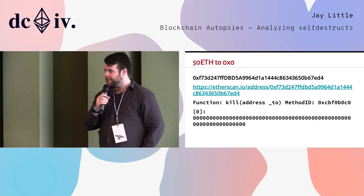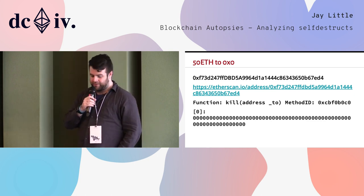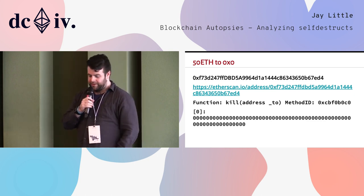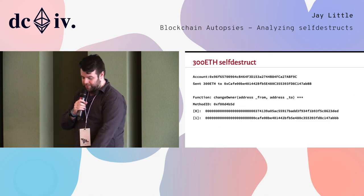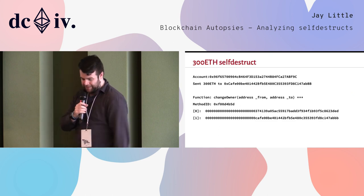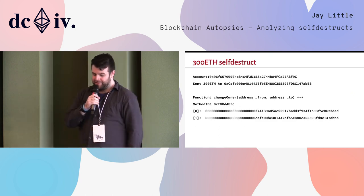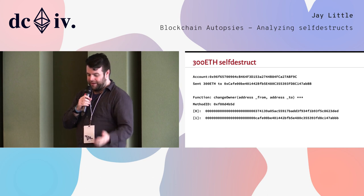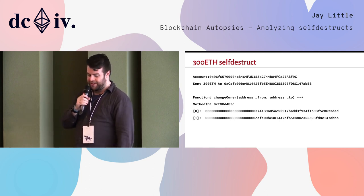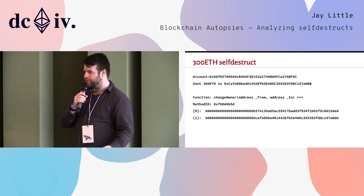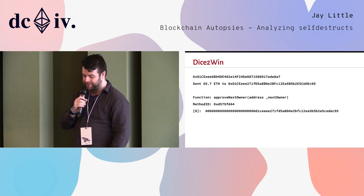For a few highlights of these results: this one — the original owner actually destroyed the contract and sent 50 ETH to address 0. RIP. Then this one I got excited about because it's 300 ETH and it's self-destructed, but it turns out when you look at previous transactions, the owner was intentionally changed by the original creator, so this probably wasn't an attack.